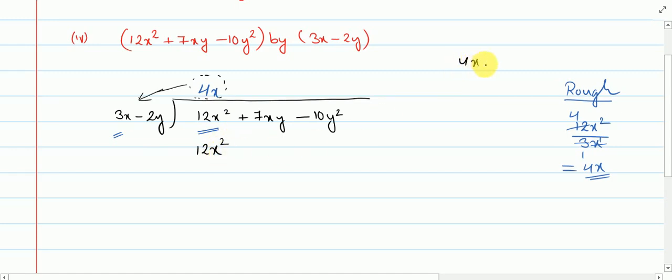How we are getting this: 4 times 3 is 12 and x into x means x to the power 1 into x to the power 1, base same power will be added so you get x squared. Now 4x into minus 2y, so 4 into minus 2y you will get minus 8 and x into y you get simply xy, so you get minus 8xy.